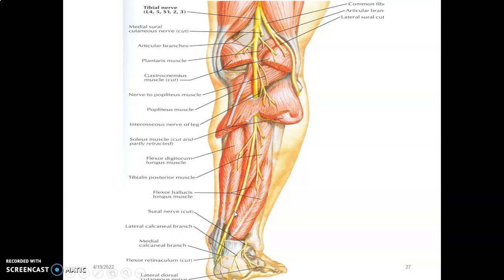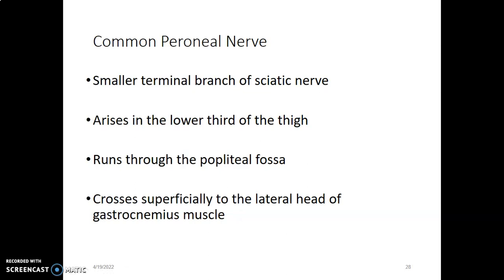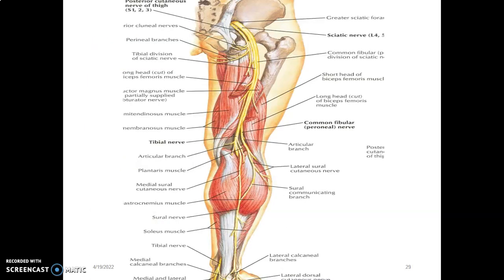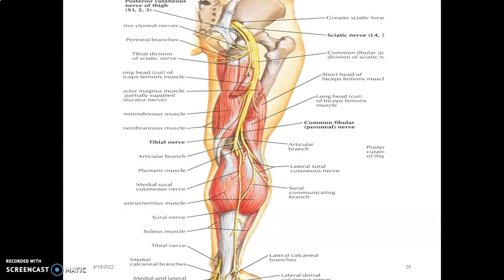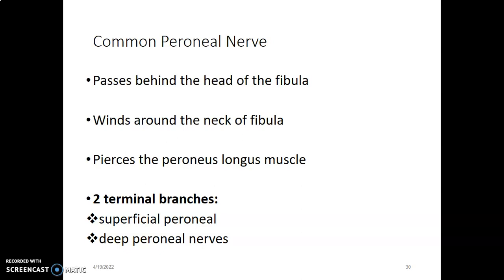The common peroneal nerve is the smaller terminal branch of the sciatic nerve. It also arises in the lower third of the thigh at the upper part of the popliteal fossa, then runs through the popliteal fossa towards the lateral aspect, crossing superficially to the lateral head of gastrocnemius. It then passes towards the inner aspect of biceps femoris, along the lateral border of gastrocnemius, and passes behind the head of the fibula.